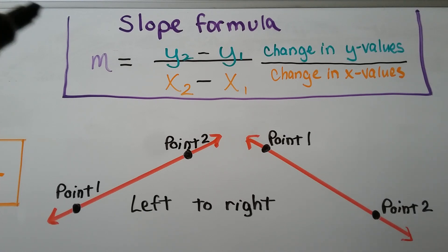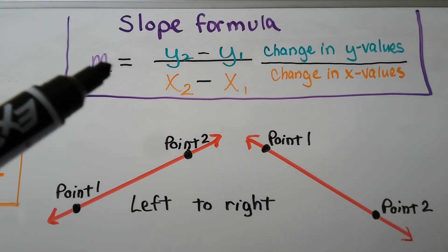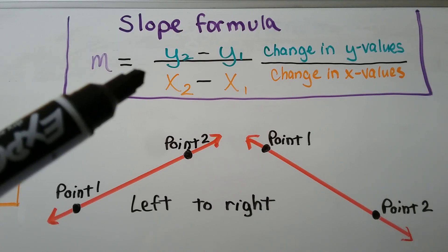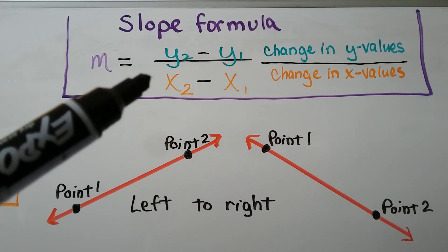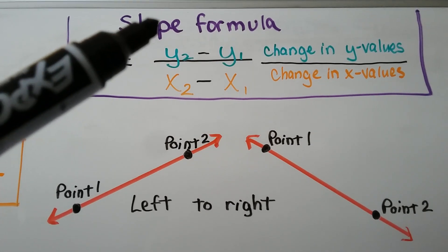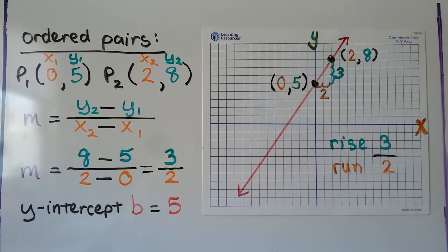Remember the slope formula: m, the slope, is equal to the change in y-values divided by the change in x-values. It's the rise over the run. So we can find slope and y-intercept on a graph just by looking at it.